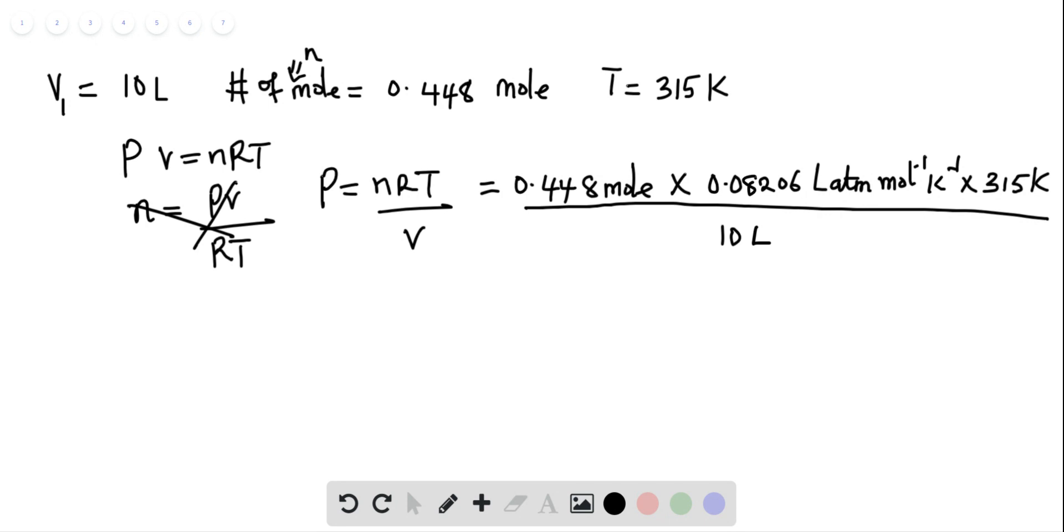If you input in your calculator 0.448 times 0.08206 multiplied by 315 divided by 10, you will have the pressure equal to 1.16 atmosphere. And that is the answer.